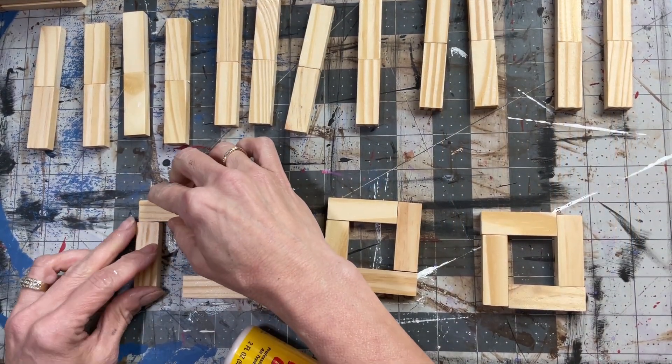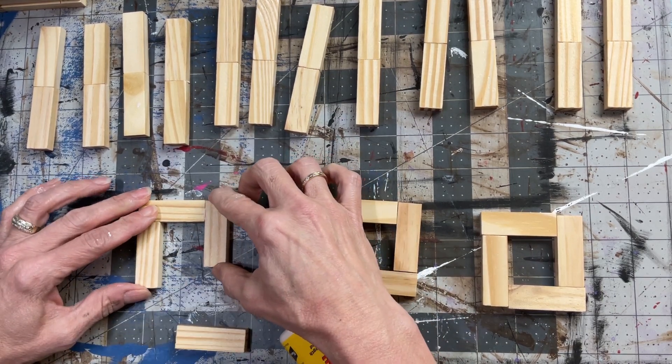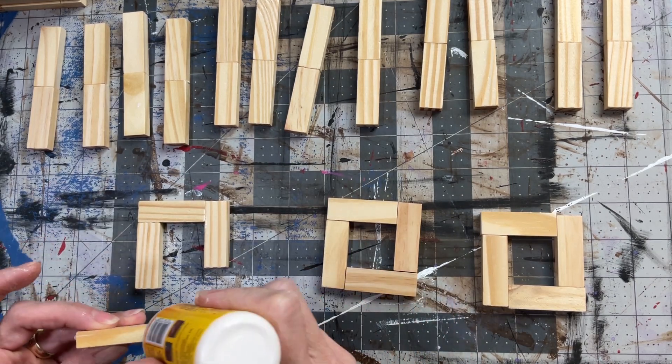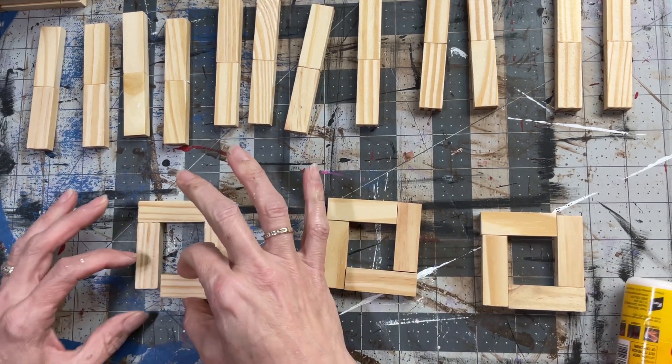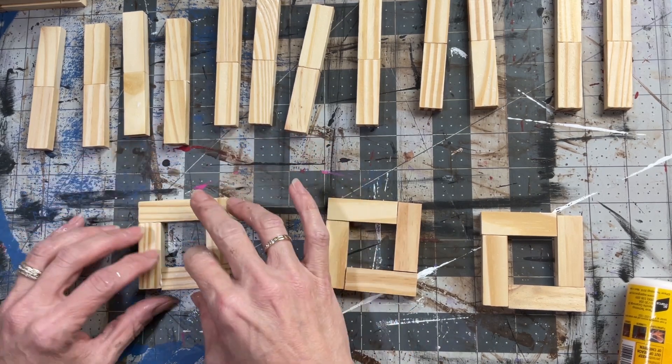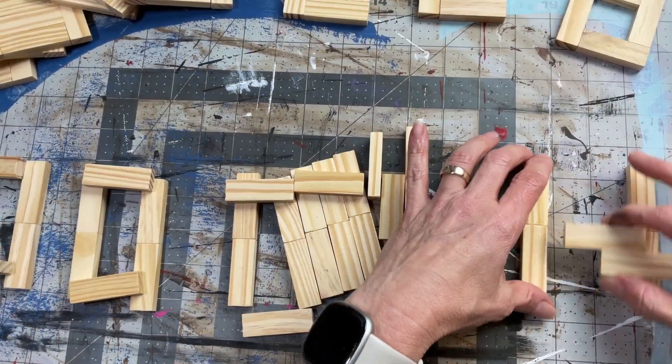For each lantern, you also need a square. This is just the exact same way that we glued the wood crates together for DIY number two. So each of my lanterns is going to get one of these squares of four blocks and I'm showing you how I'm gluing them together, making sure they're all lined up and straight.